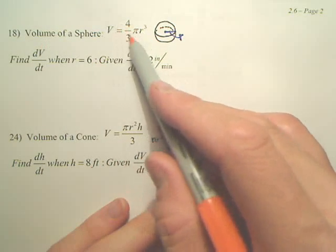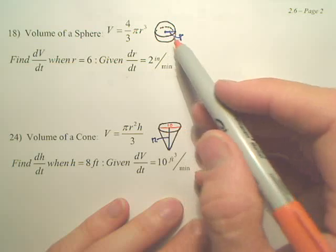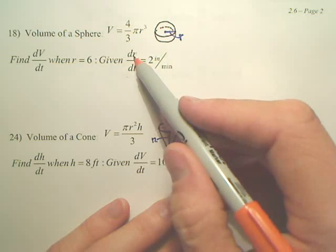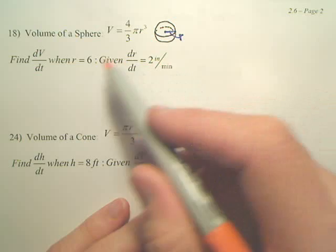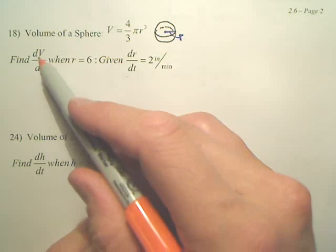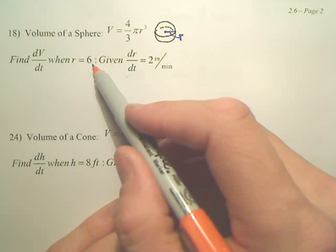We have the volume of a sphere, because what's happening is a sphere is increasing at a rate of 2 inches per minute. That's given. We want to find how much the volume is changing when the radius is 6.